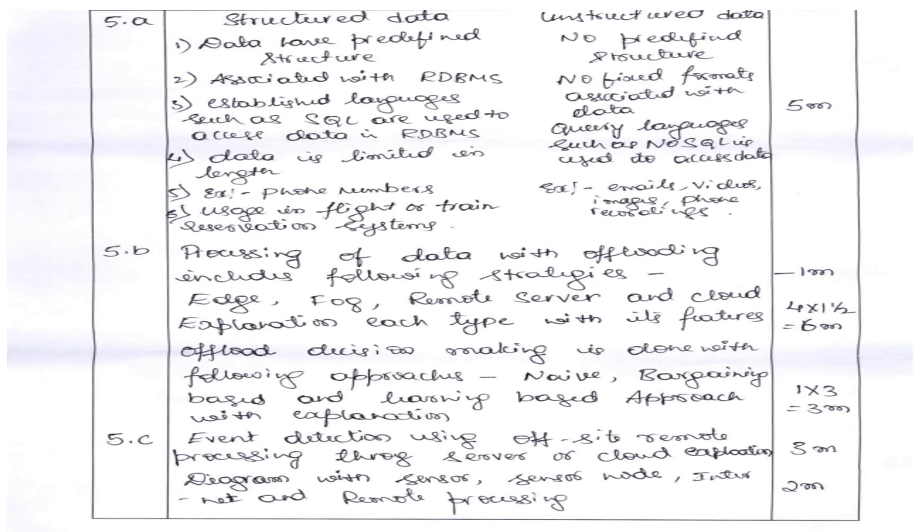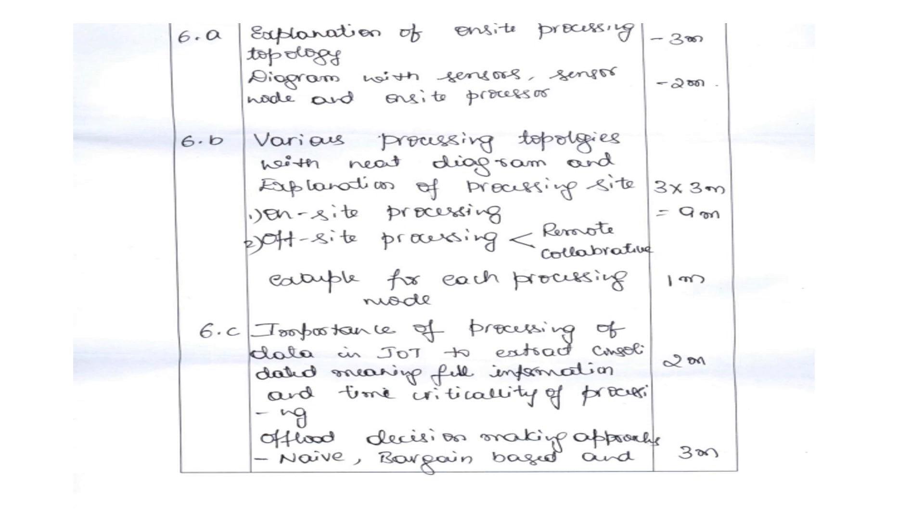For 5C, off-site remote processing: describe event detection using off-site remote processing for three marks, and draw a diagram with sensor node, internet, and remote processing for two marks. For 6B, various topologies — on-site and off-site, where off-site is further divided into remote and collaborator — explained in detail with real-time examples carries nine marks. Importance of processing of data in IoT, including decision making approaches and naive Bayes-based approach, with examples carries five marks.